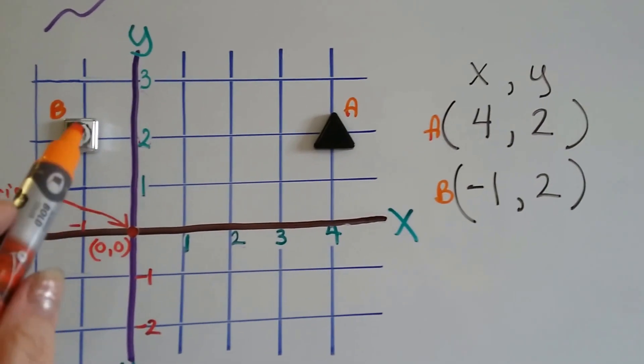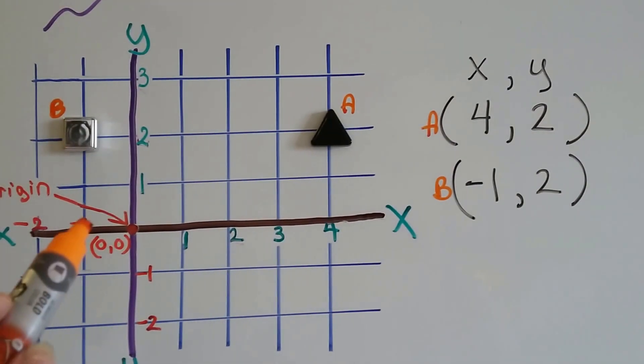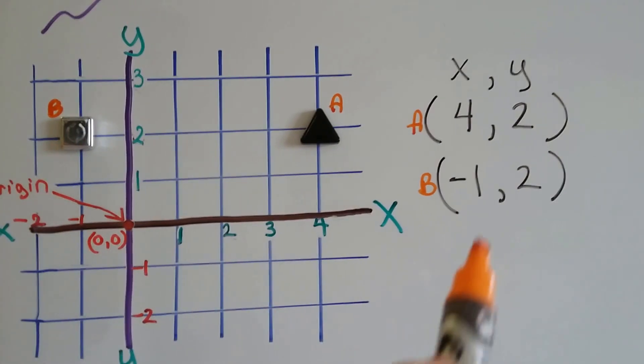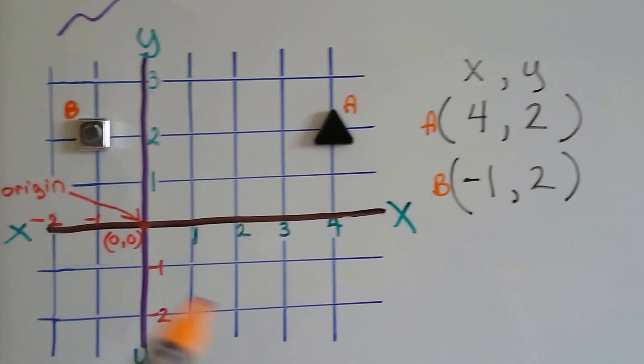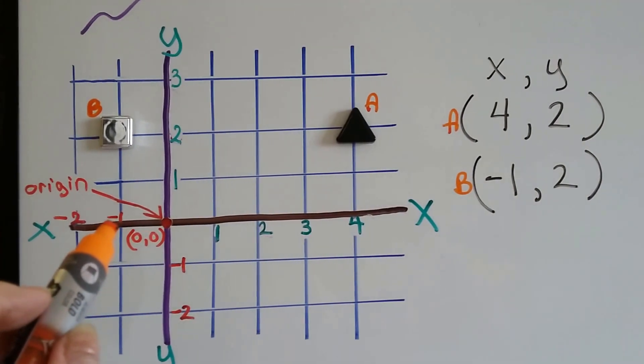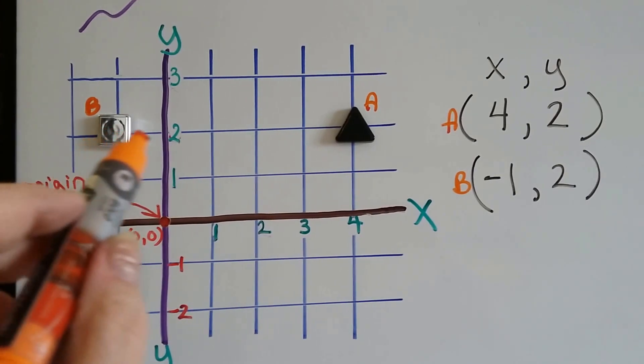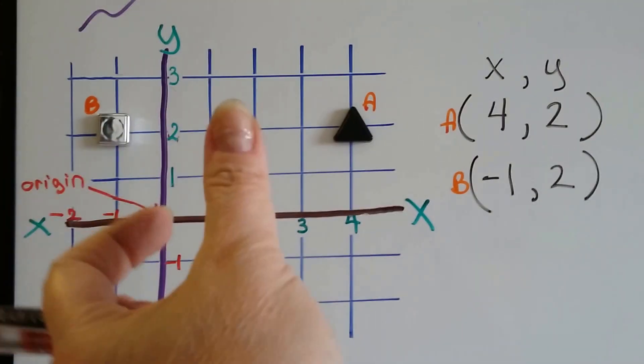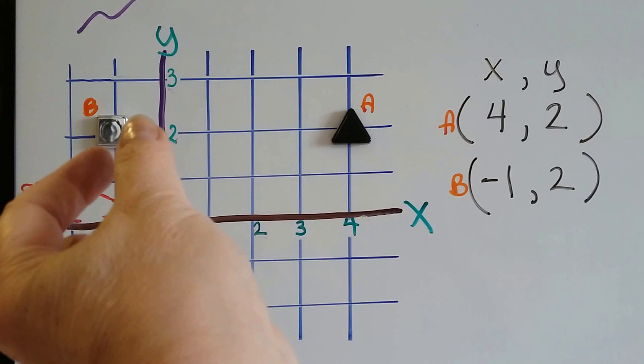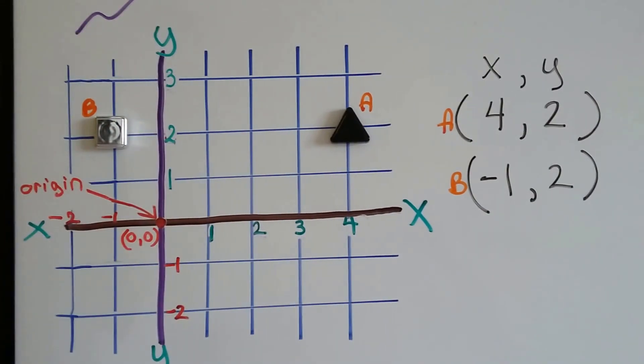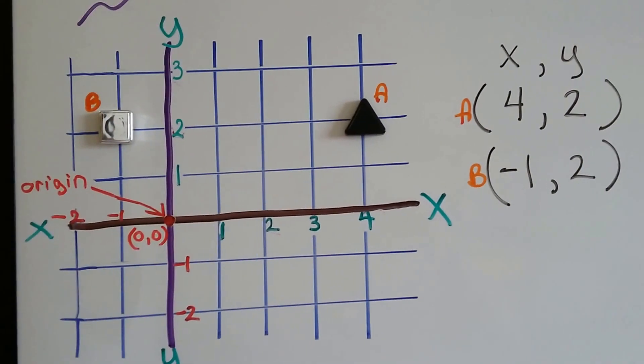Can you tell where this one's at? This is negative 1 comma 2. Negative 1 comma 2 would be negative 1 on the x-axis and 2 on the y. And they would meet and come like that and meet right there on B. Right on my silver magnet right there.